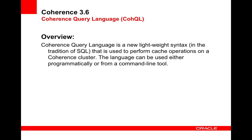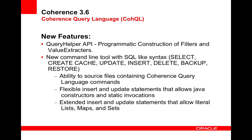The language can be used either programmatically or from a new command line tool. The programmatic API is used for the construction of filters and value extractors — you can think of it as being like the WHERE clause in a SQL SELECT statement. The command line tool is a much more full query language that looks on the surface like SQL, and is also compatible with a lot of JPQL.